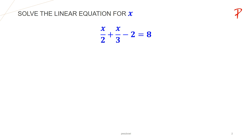Let us solve this linear equation for x. In this question, we will try to find out the value of x. So we have two fractions here: x upon 2 and x upon 3, minus 2, and this is equal to 8.